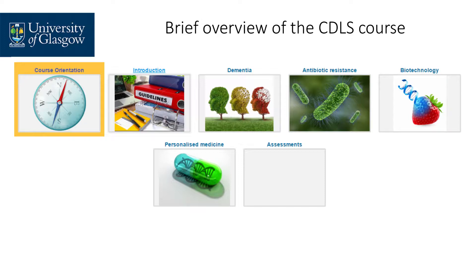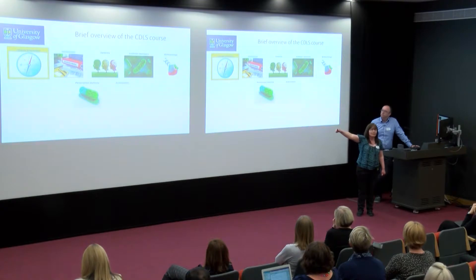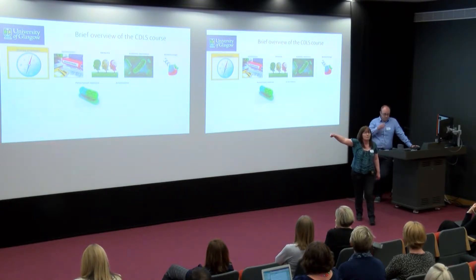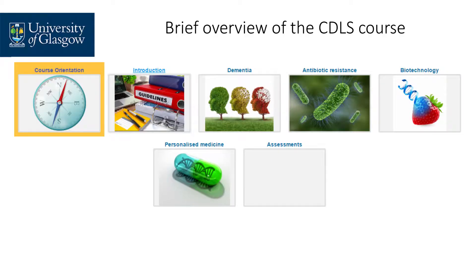For course orientation, students enrol and that's the only block they see. They go in and do those activities. They see course orientation, complete a glossary post about themselves, and upload an image. That then displays on the side. So as soon as they start, they will see their own content appearing on the front page of the Moodle site.